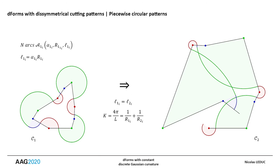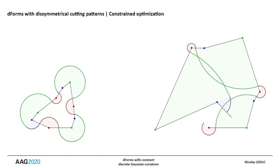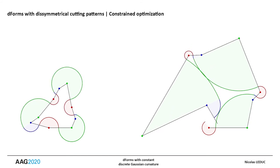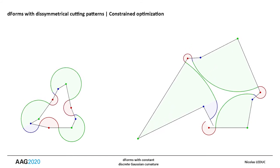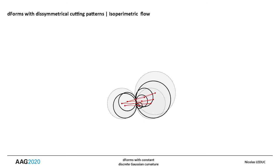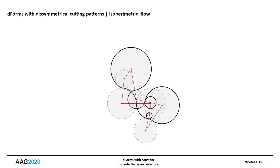In the general case, the concatenation of the computed arcs of the second cutting pattern yields an open curve. By applying the closure conditions outlined in the paper, it is possible to close them by constrained optimization.